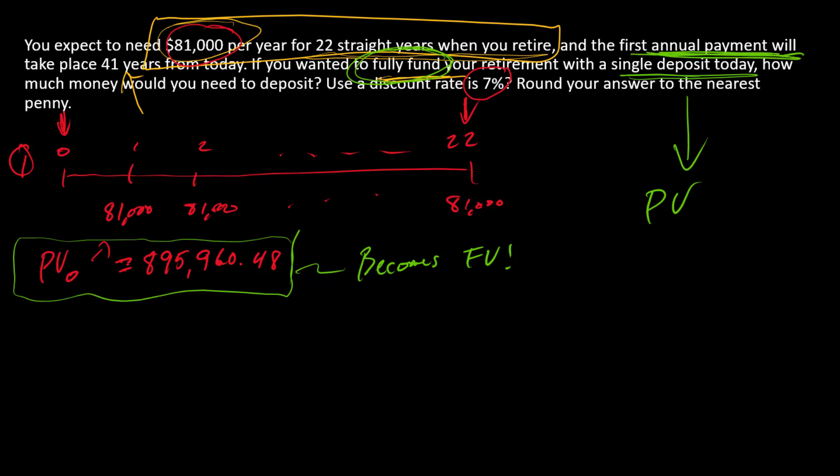When is that the FV? Here's where we have to be a little bit careful. The first annual payment in the retirement period is going to be 41 years from today. We can think about this time right here as 41, and this is 42, and so on. We're going to re-index this timeline. What is this time zero? That would be time 40.